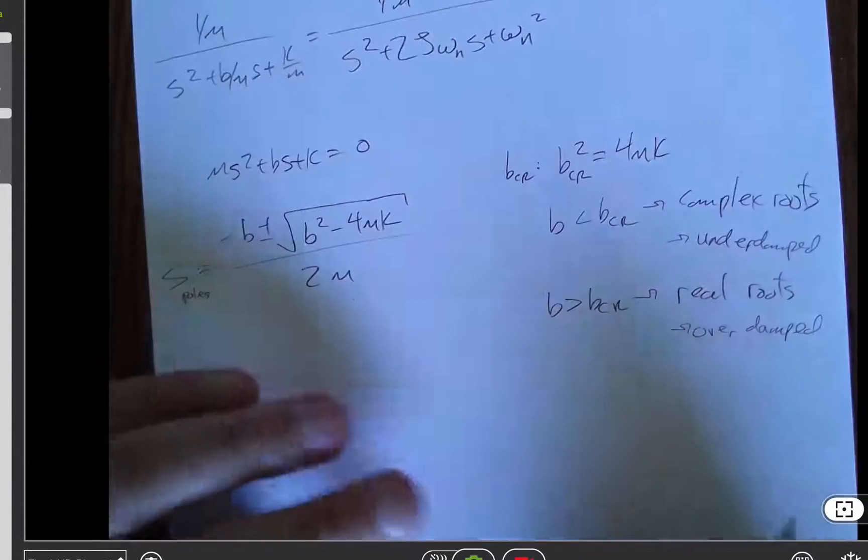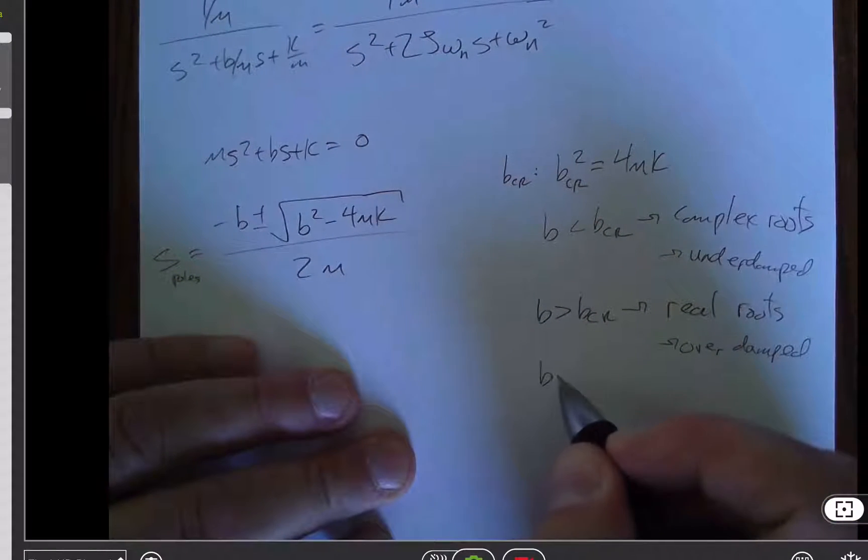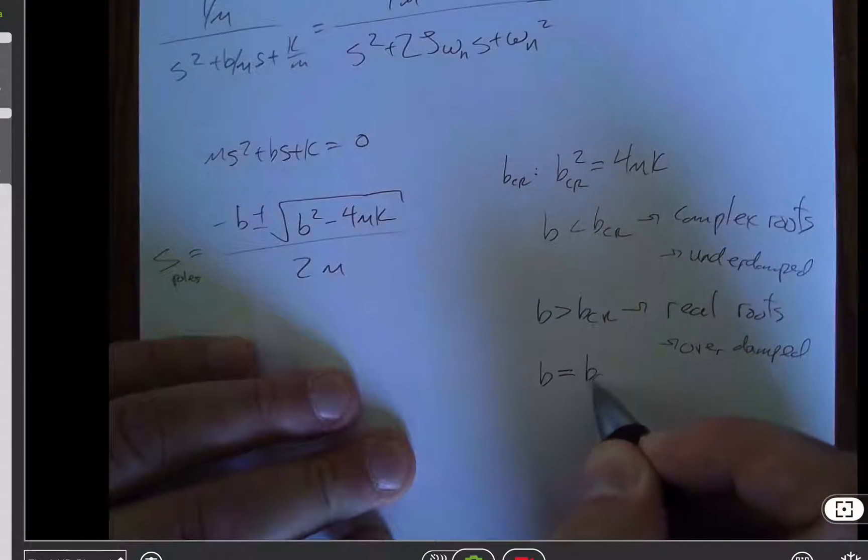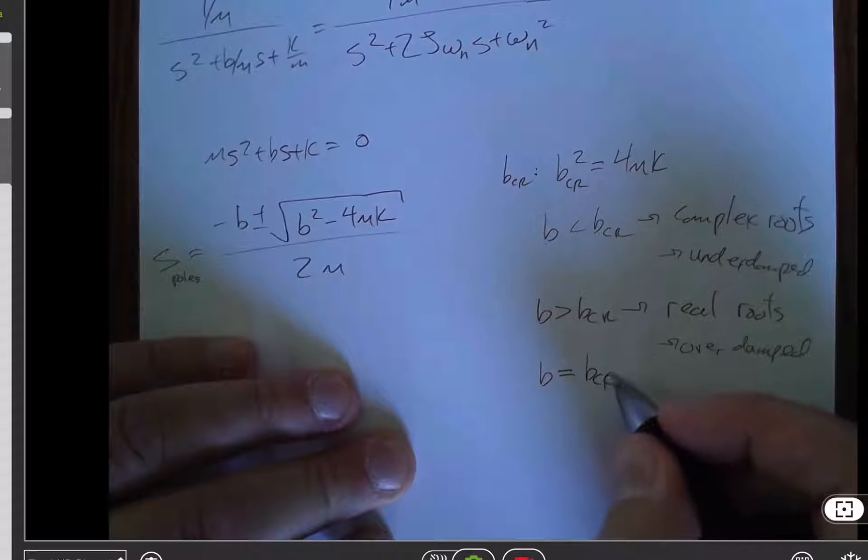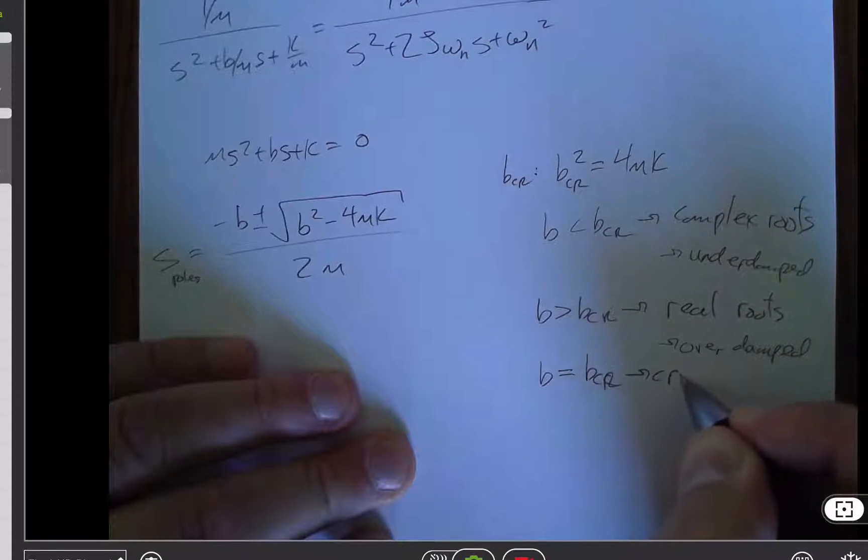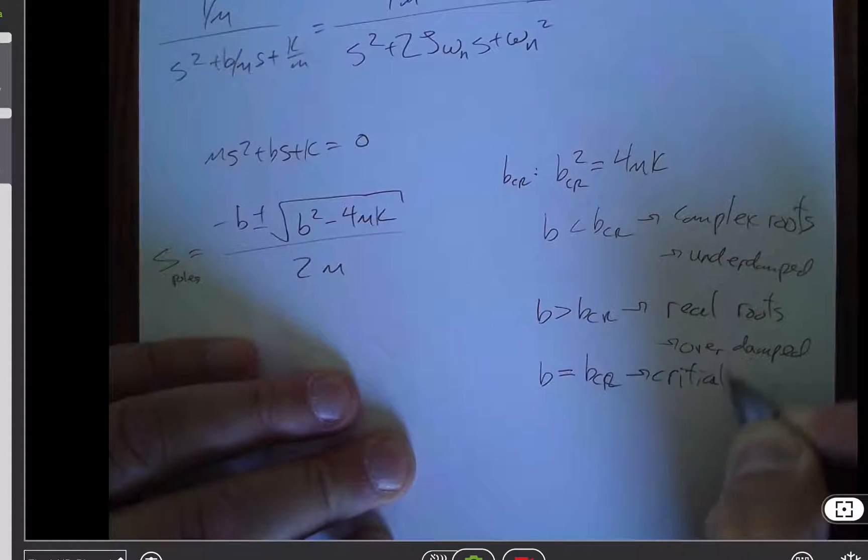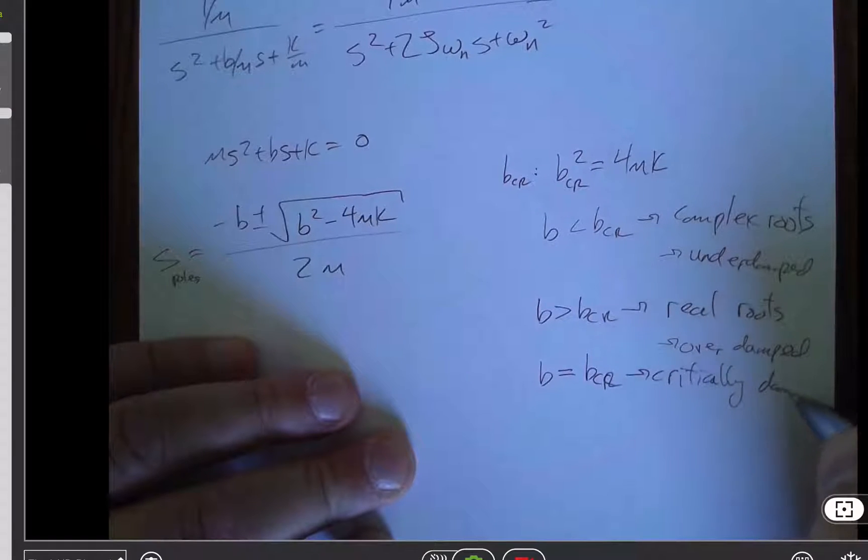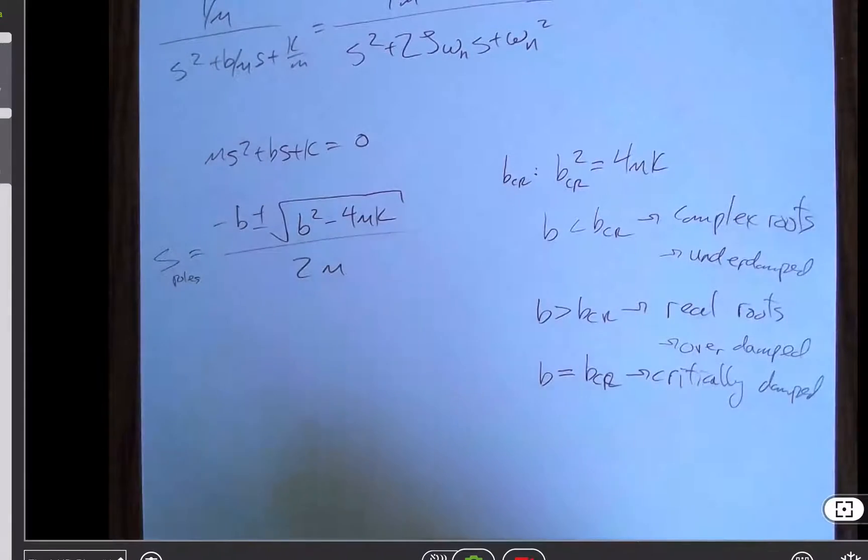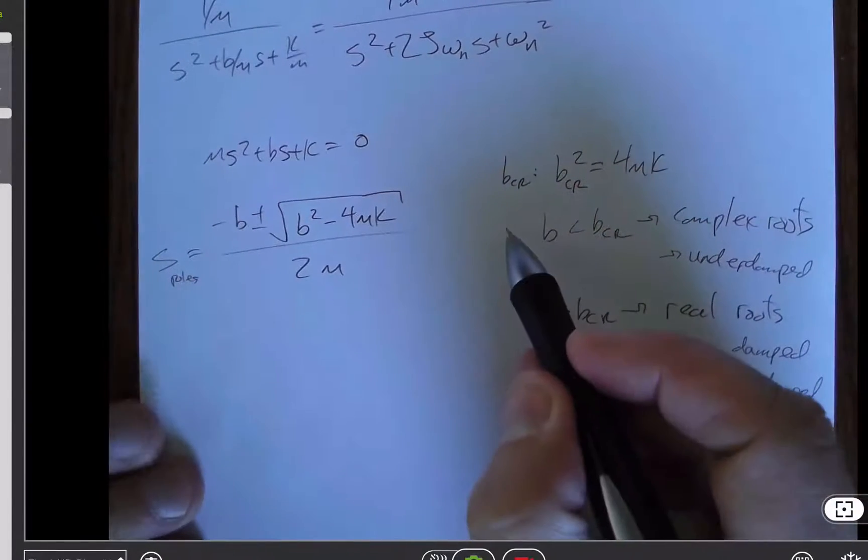And if you're a mathematician, you might care about b exactly equal to b critical. And that is defined to be critically damped. And that's an interesting case for mathematicians to consider.